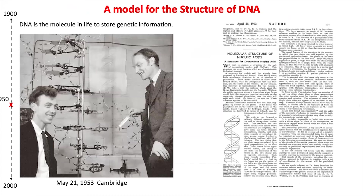Now that you have a visualization of the central dogma in action, let's go back to 1953 — a very critical year in molecular biology. What you see is a historic picture taken on May 21, 1953, with Watson on the left and Crick on the right, standing in front of their model of DNA structure. They proposed this model in a very famous paper in Nature in 1953, shown on the right-hand side — essentially a one-page paper, a few hundred words — which today we know was very accurate about the structure of DNA.